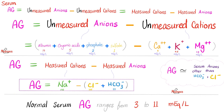What are your unmeasured anions? There are many, including albumin, organic acids, phosphate, and sulfate. What are your unmeasured cations? Calcium, potassium, and magnesium. From the cations, we measure sodium. From the anions, we measure chloride and bicarbonate. The normal anion gap is 12 or below.